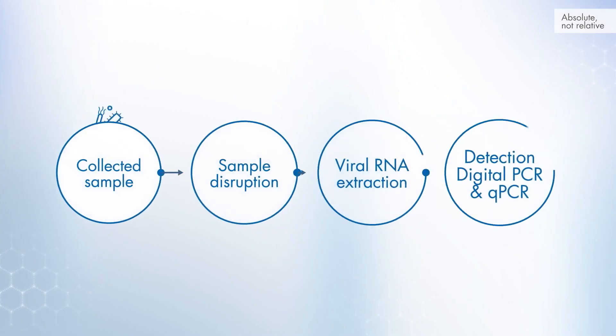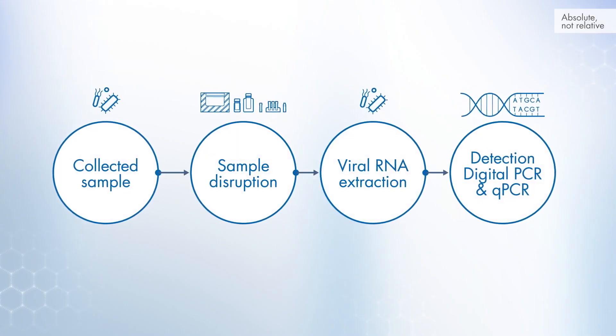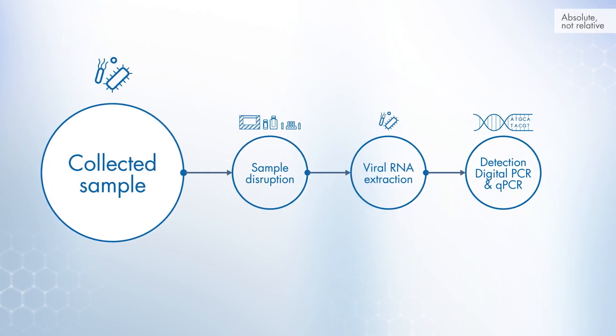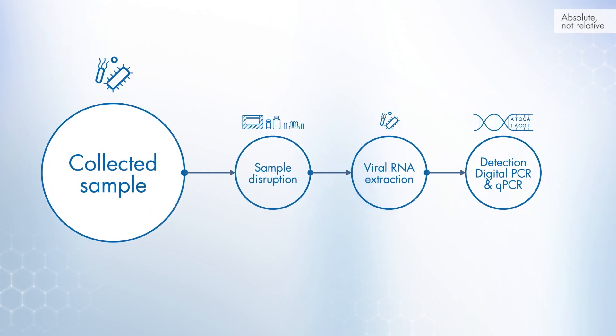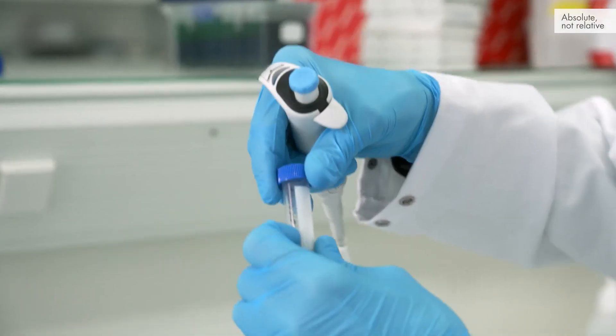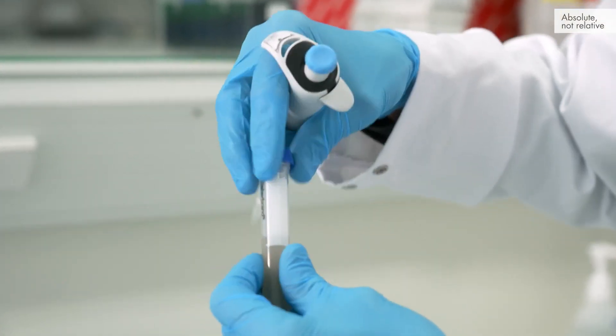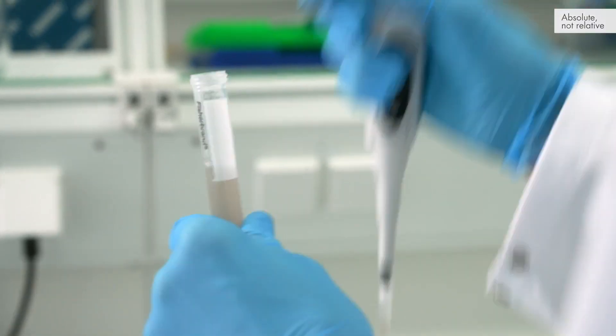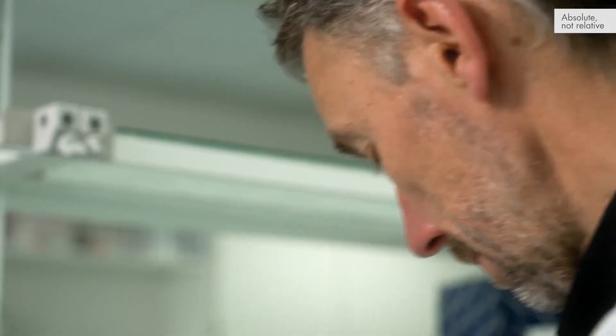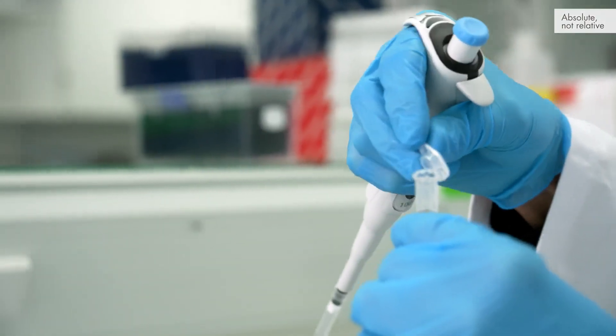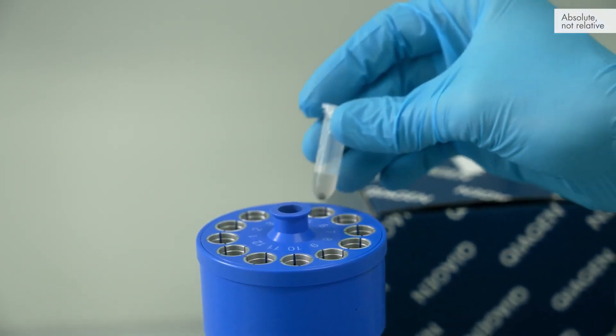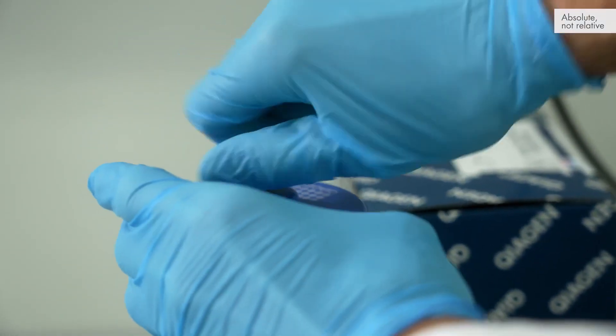After sample collection, the next step is sample preparation. A matrix recovery control is spiked into the sample during this step. The second step is sample concentration, which is more important for untreated samples than sludge samples, and can be done by ultrafiltration, polyethylene glycol precipitation, ultracentrifugation, or other methods.